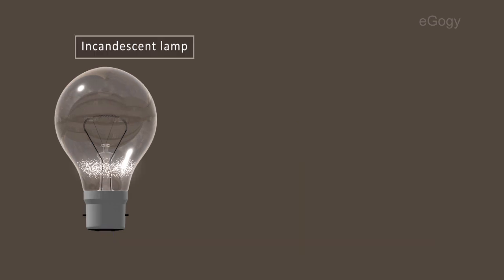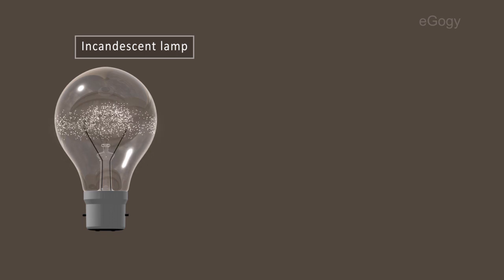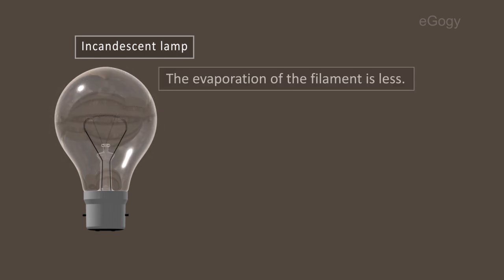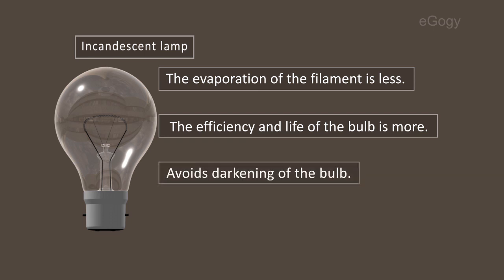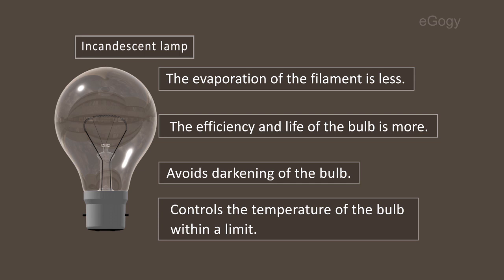Let's see the merits of using noble gas inside an incandescent lamp. The evaporation of the filament is less. The efficiency and life of the bulb is more. It avoids darkening of the bulb and controls the temperature of the bulb within a limit.